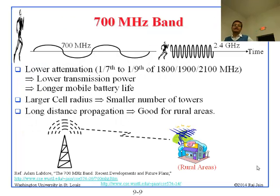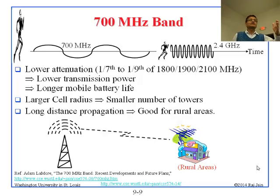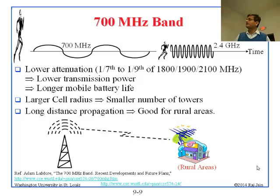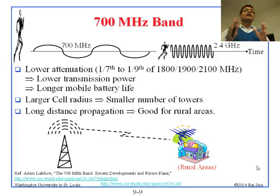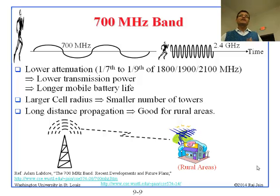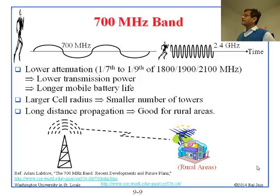Then there is the TV band at 700 MHz. We have been working at 2.4 and 5.9 GHz so far, but now we have the chance to use these TV channels at 700 MHz that the government is allowing. Using the principles we just saw, 700 MHz has a very long wavelength compared to 2.4 GHz. It is good for long distance, so everybody wants it — cell companies, safety people, the general public, and Google too. Why? Lower attenuation — one-seventh to one-ninth of 2100 MHz because it is F-squared: at 700 MHz versus 2100 MHz, that is one-third the frequency, meaning one-ninth the attenuation.